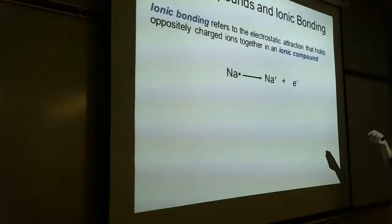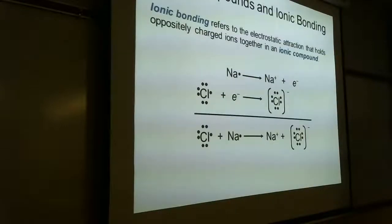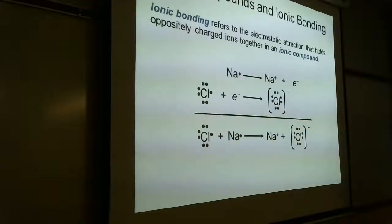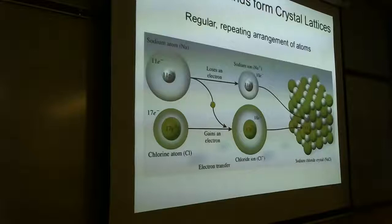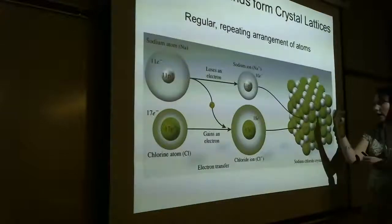Ionic bonding is a very strong electrostatic attraction between a cation and an anion. Electrons are lost by one and gained by the other. For example, sodium loses its one valence electron and becomes the sodium ion, while chlorine picks it up and becomes chloride. That creates the ionic bond — sodium chloride.